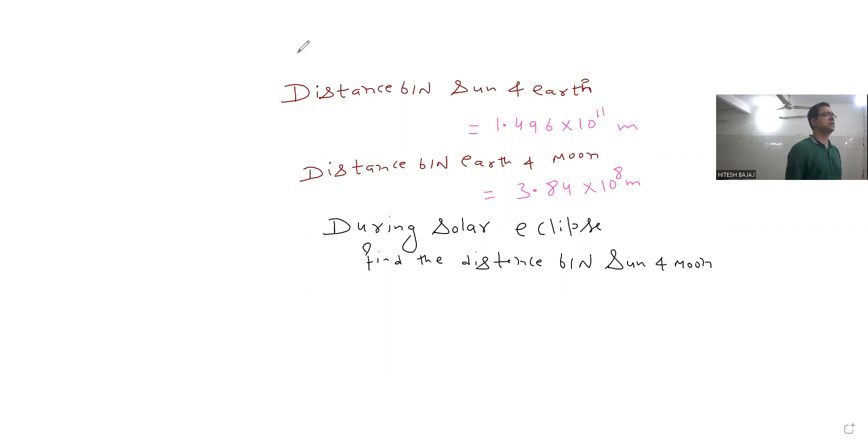Distance between sun and earth is 1.496 into 10 to the power 11 meters, and distance between earth and moon is 3.84 into 10 to the power 8. During the solar eclipse, find the distance between sun and moon.